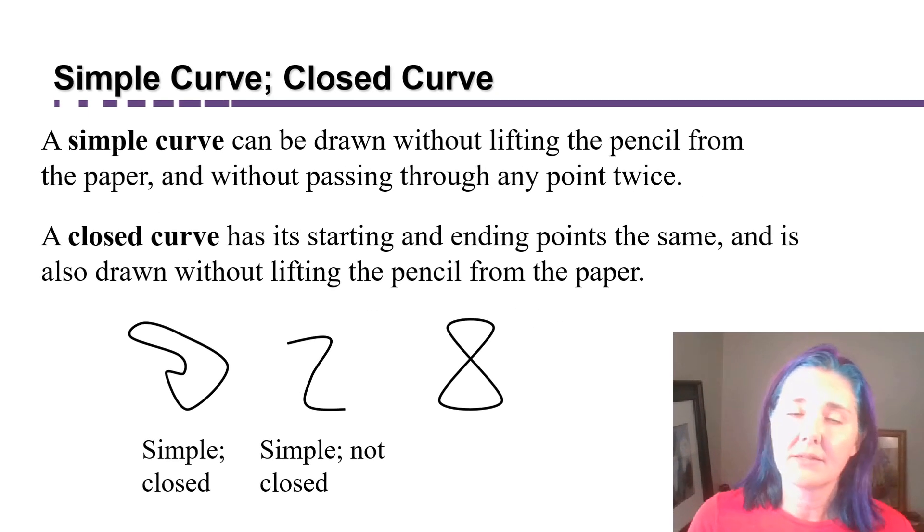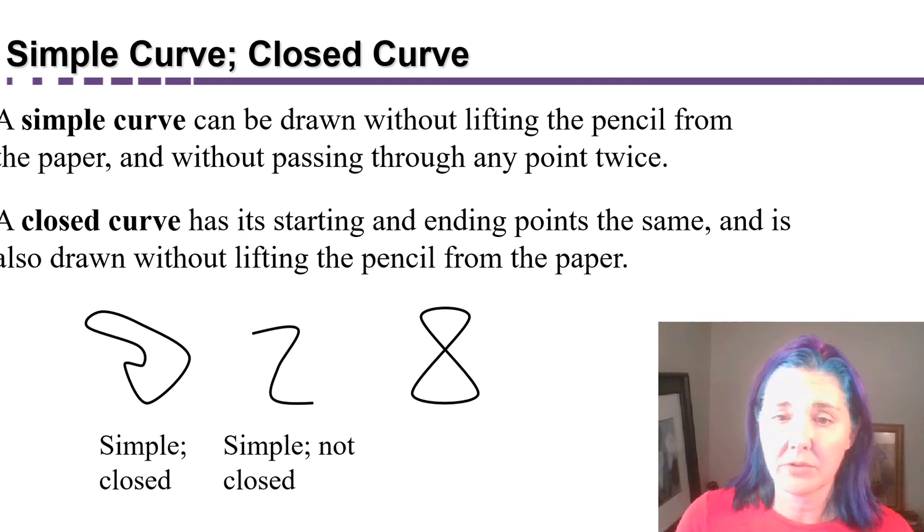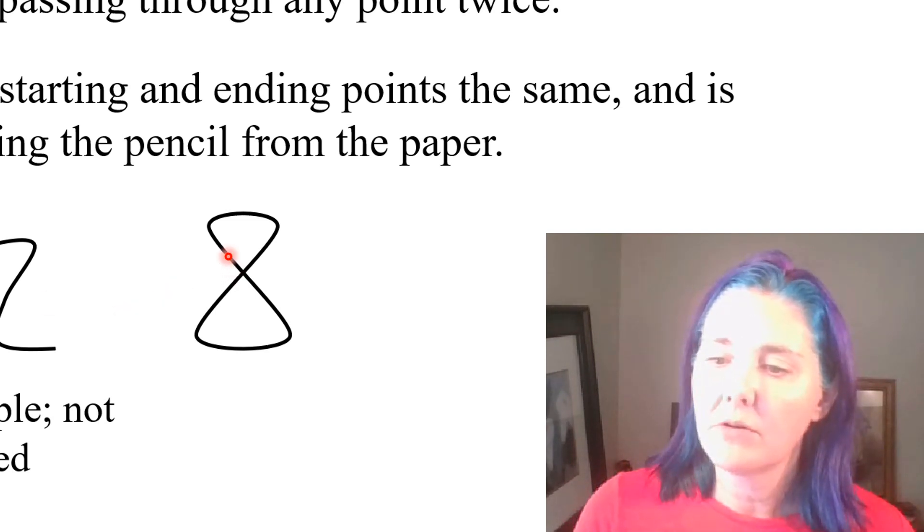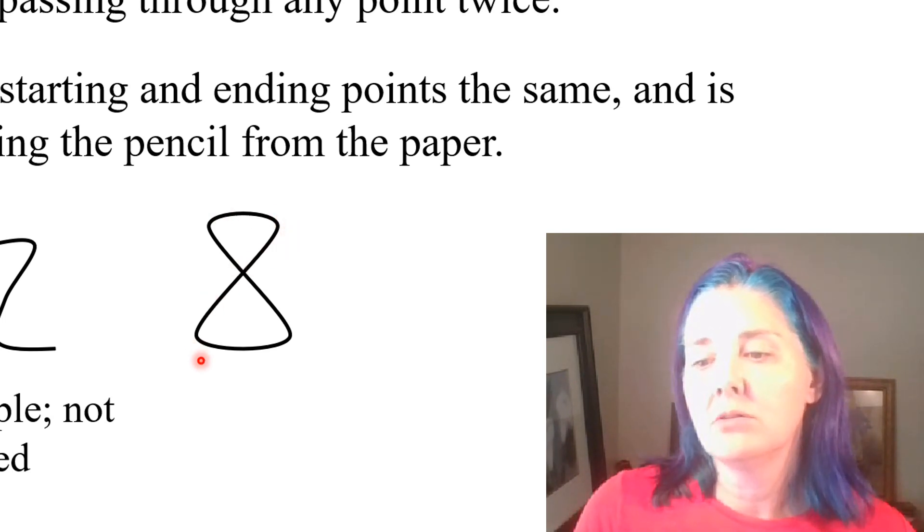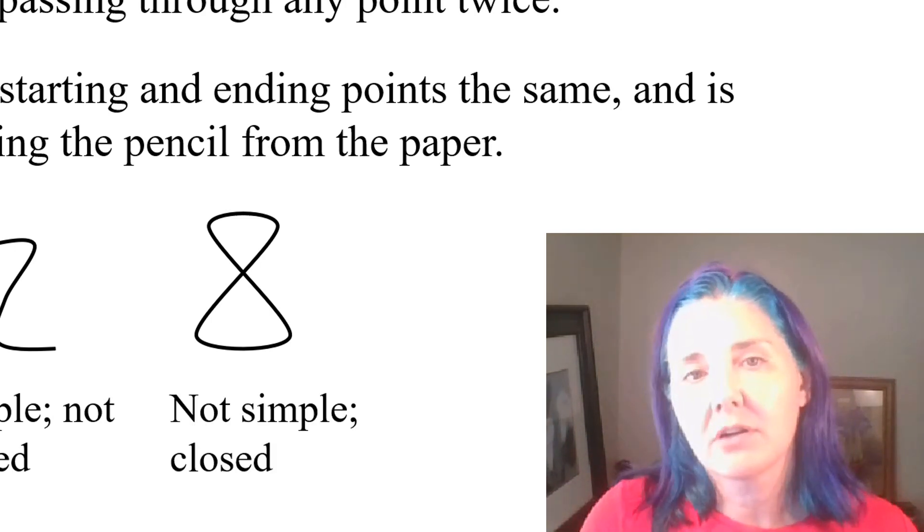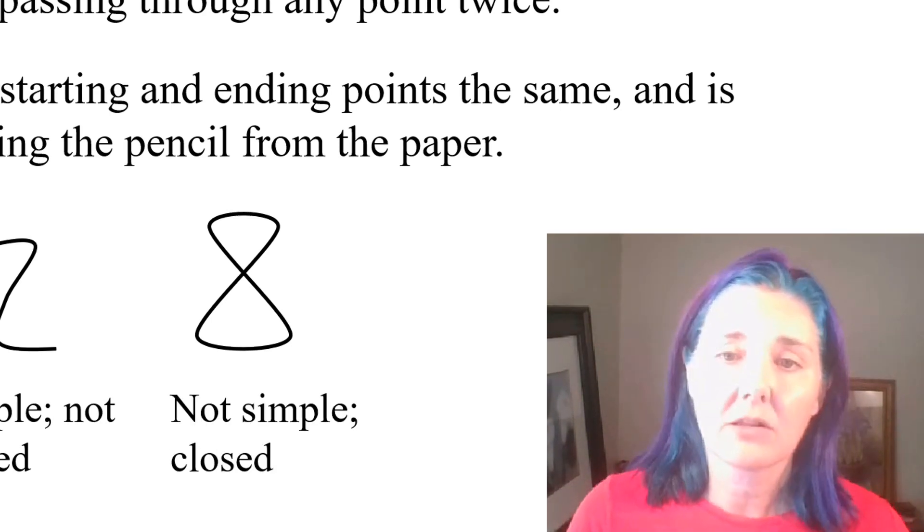How about this one? Is it a simple curve? Well, you can draw it without lifting your pencil from the paper, but it passes through that point in the middle twice. So, it's not a simple curve. It is closed, however, because if you imagine any point on here as the starting point, you can imagine coming back to that point as the ending point. It loops around. So, this is an example of a curve that is not simple, but it is closed.